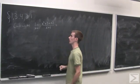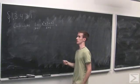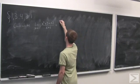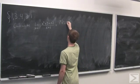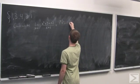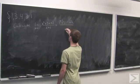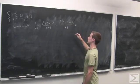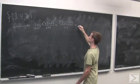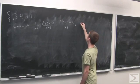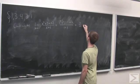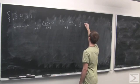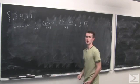So to compute this limit, we simply stick in x equals 1, which then simplifies to 1 plus 3 plus 2, or 6, over 2, or just 3.